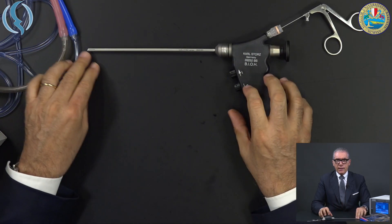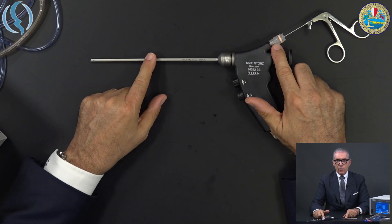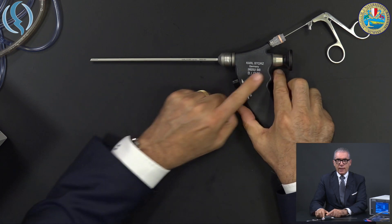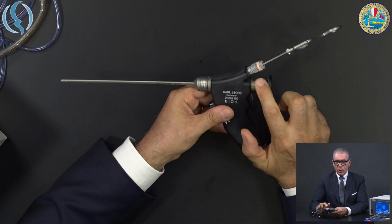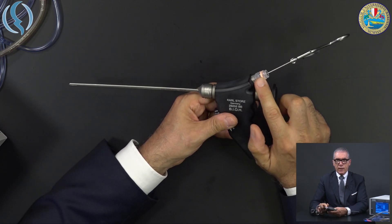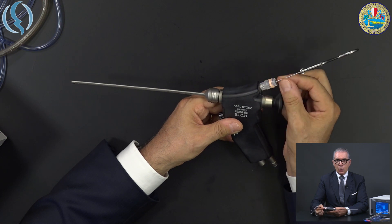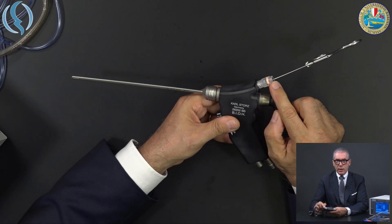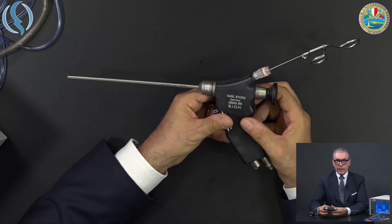Another characteristic is that the operative channel here does not present any stopcock. This is because we have an automatic valve with a membrane inside. So you can retract the instrument or insert the instrument without losing liquid thanks to these new rubber seals here.